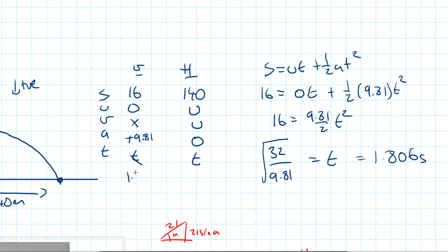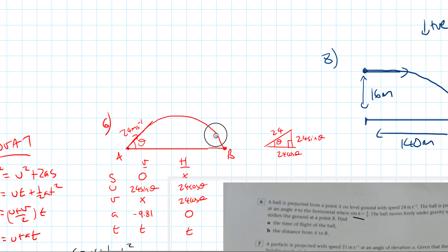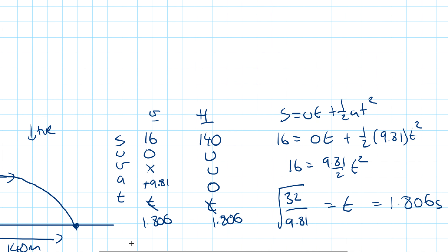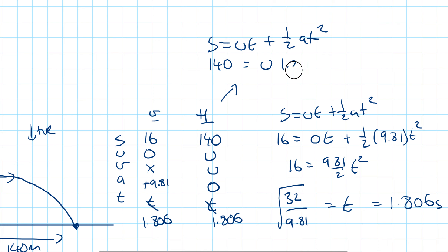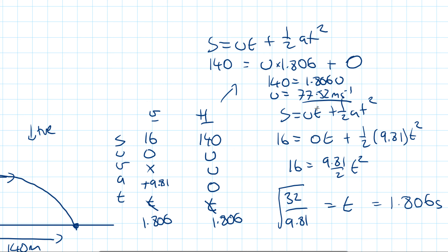Now using the horizontal equation with t = 1.806: 140 = U × 1.806 + ½(0)t², so 140 = 1.806U, therefore U = 140/1.806 = 77.52 metres per second. Since there is no initial vertical velocity, the speed is entirely horizontal and we don't need to apply Pythagoras — 77.52 m/s is the answer.